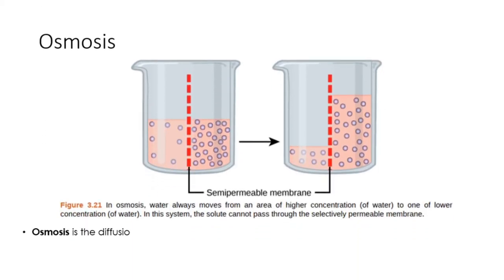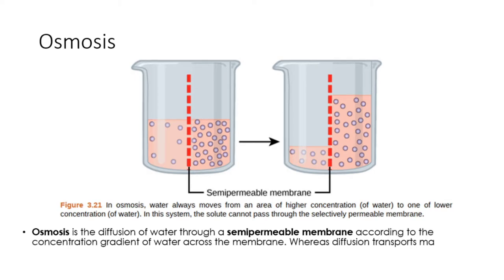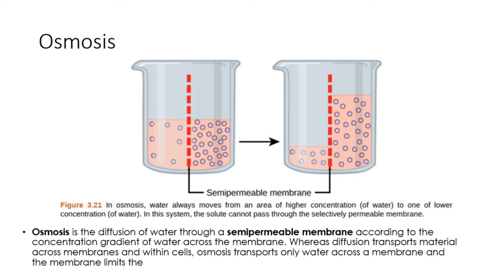Osmosis is the diffusion of water through a semi-permeable membrane according to the concentration gradient of water across the membrane. Whereas diffusion transports material across membranes and within cells, osmosis transports only water across a membrane, and the membrane limits the diffusion of solutes in the water.